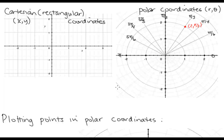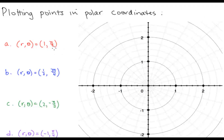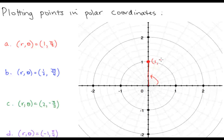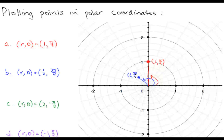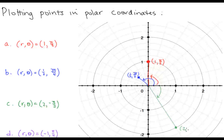Let's take a look at some more examples. For (1, π/2), we find the angle π/2 — that's in this direction — and we go out one unit, so our point is here. For (1/2, 3π/4), we find the angle 3π/4 — that's here — and we go out one half a unit, which leaves us here. For (2, -π/3), we find the angle -π/3, going down π/3, which brings us here, and we go out two units in that direction.